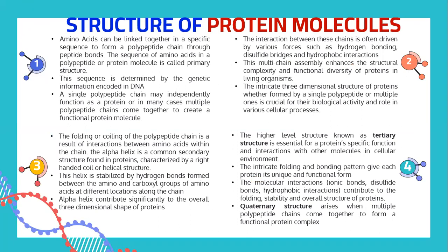The structure of protein molecules: amino acids can be linked together in a specific sequence to form a polypeptide chain through peptide bonds. The sequence of amino acids in a polypeptide or protein molecule is called the primary structure. This sequence is determined by the genetic information encoded in our DNA. A single polypeptide chain may independently function as a protein, or in many cases, multiple polypeptide chains come together to create a functional protein molecule.